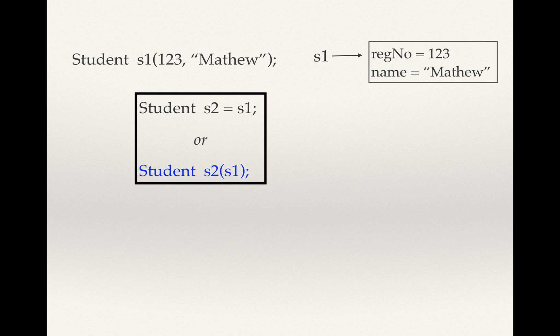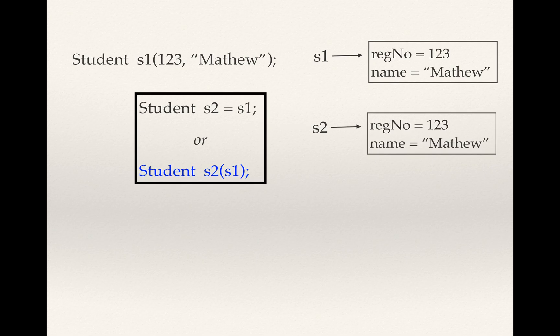If we want to create one more object s2, represented as 'student s2 = s1', then whatever is available in s1 will be copied to s2. The same statement can also be written as 'student s2(s1)'. This copy operation happens with the help of the default copy constructor.